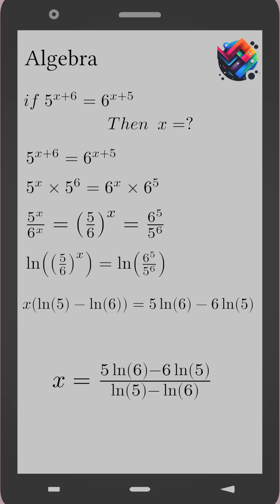x equals open parenthesis 5 ln 6 minus 6 ln 5 close parenthesis divided by open parenthesis ln 5 minus ln 6 close parenthesis. This is the exact value of x.